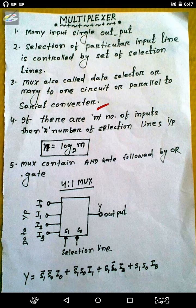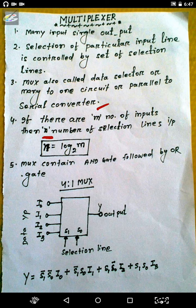If there are m number of input lines to the MUX and n number of selection lines, then the relation between n and m is n equals log m base 2. MUX contains AND gates followed by an OR gate.